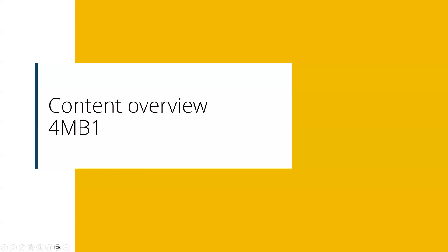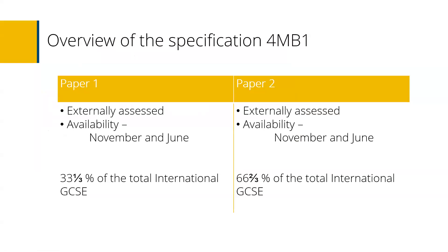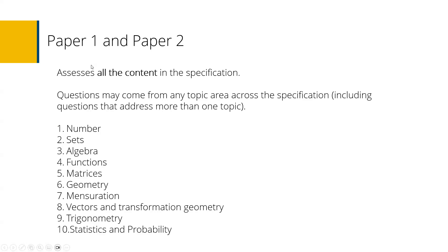Looking at 4MB1 in a similar way — again two papers offered twice per year in January and June. The papers differ in structure: Paper 1 is weighted at one third of the total examination and Paper 2 at two thirds. There are 10 topics to teach: numbers, set theory, algebra, functions, matrices, geometry, vectors, transformation, trigonometry, and statistics and probability. As with MA1, a single question can address more than one topic.